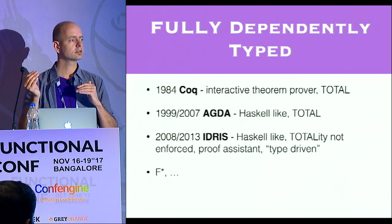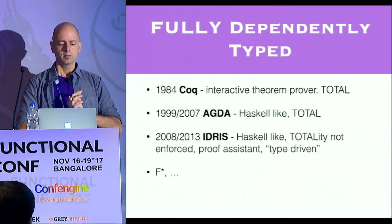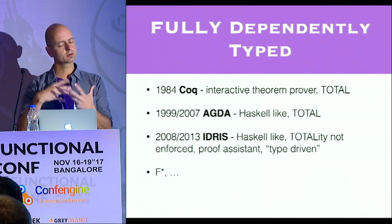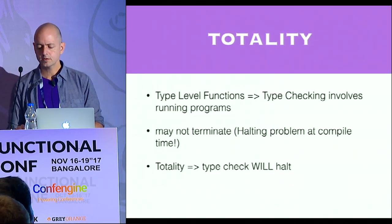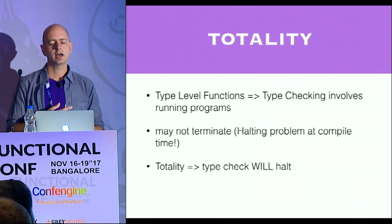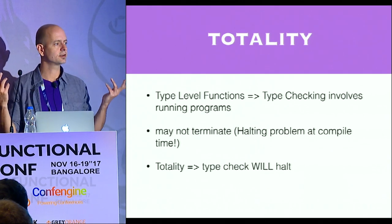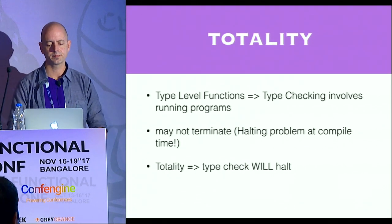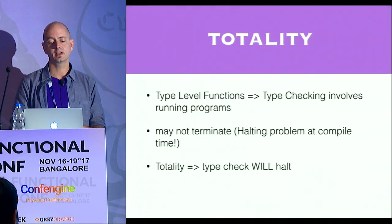Idris, Coq, and Agda are total languages. Totality means the type systems are so sophisticated that the compiler can enforce that you cannot write recursive functions that will not terminate. What it does is try to always prove that if you do have recursion, it converges — every step converges. The moment we have type-level functions, we have compile-time computation, and the moment you're computing you have the halting problem. So you move the Turing halting problem to compile time from runtime with dependently typed programming.